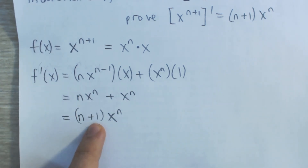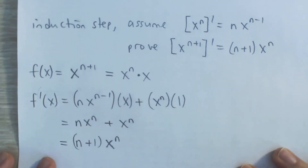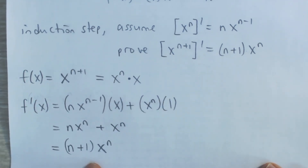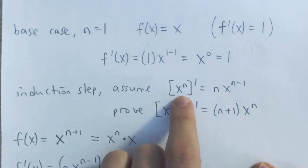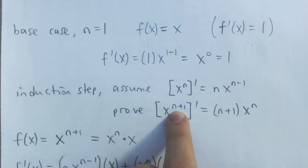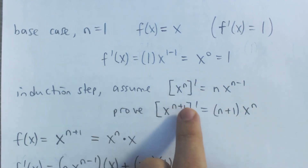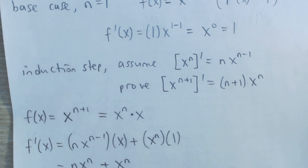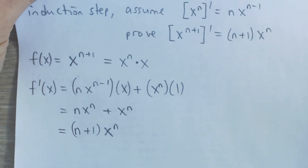And you can see that the derivative is indeed n plus 1 times x to the n. We've proved what we want to prove. This means that if it's true for n, then it's also true for n plus 1. And we've proved that it's true for 1. So given that it's true for 1, it's also true for 2; given it's true for 2, it's also true for 3; given it's true for 3, it's also true for 4. This is the idea of induction — if it's true for 1, then it's true for any natural number n, right up to 100, 101, etc. And so that is our proof of the power rule for natural numbers.